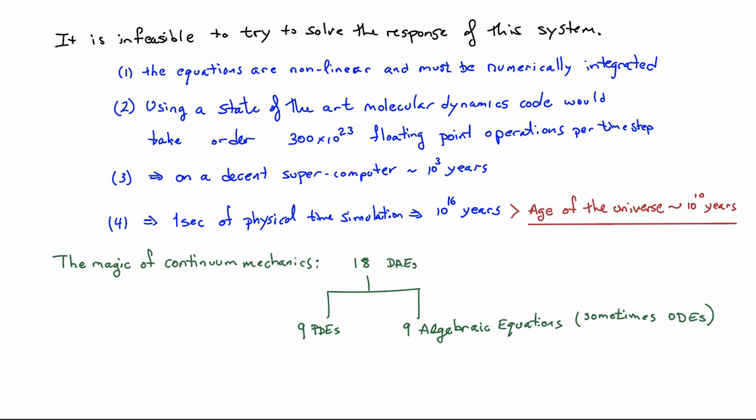And in particular, the magic of continuum mechanics is it takes this very large number of equations and turns it into 18 differential algebraic equations. So DAE here just simply stands for differential algebraic equation. And out of those 18 DAEs, what we have are nine partial differential equations, so PDEs, and nine algebraic equations. And sometimes those nine algebraic equations are actually ordinary differential equations, so ODEs. But for the simple case, the basic case, there will be nine algebraic equations. So we've gone from something on the order of Avogadro's number down to 18 through the use of continuum mechanics. So that's really the power of continuum mechanics.